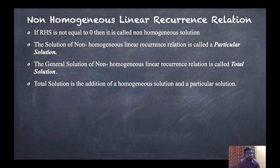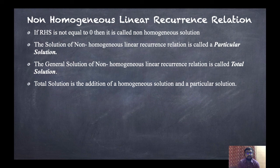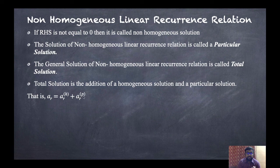The general solution of a non-homogeneous recurrence relation is called the total solution. The total solution is the addition of the homogeneous solution and the particular solution. That means AR equals ARH (homogeneous solution) plus ARP (particular solution).